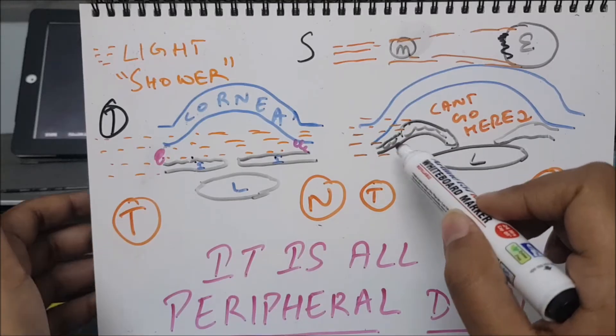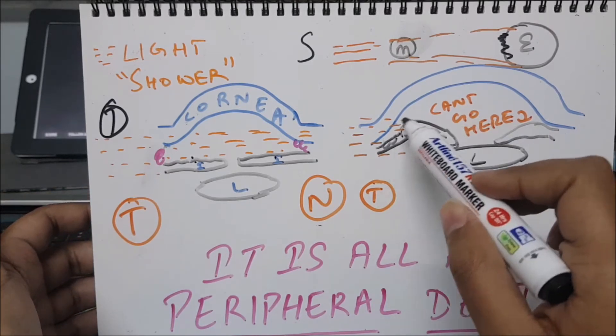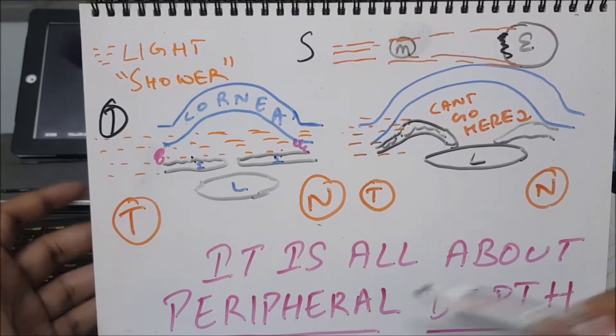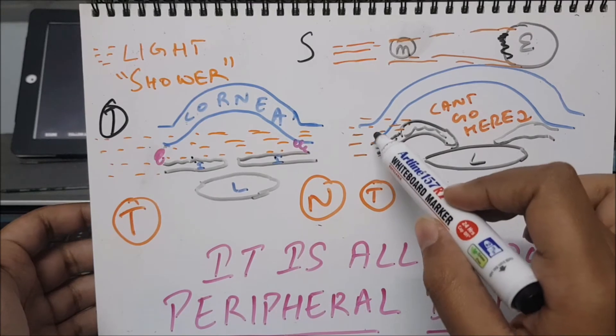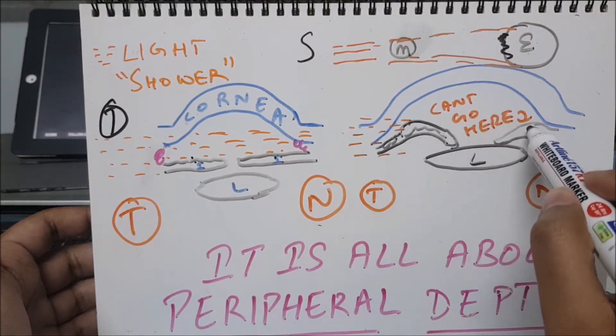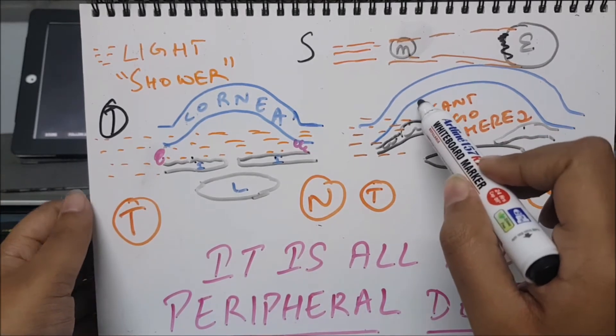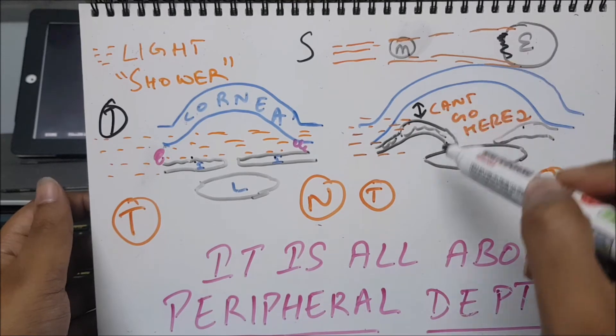We can see here there is no chance that light can travel here. So the peripheral depth - it is all about the peripheral depth. If the light is obstructed here, there is no chance it will reach to this point.